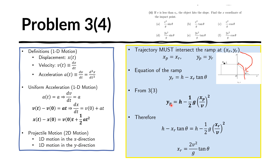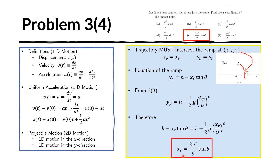For the equation of the trajectory we already obtained this in the previous problem. We find the intersection by solving the two equations simultaneously, replacing y sub p with y sub r and x sub p with x sub r. Further manipulation of this relationship gives us the final expression for the x-coordinate at the impact point.